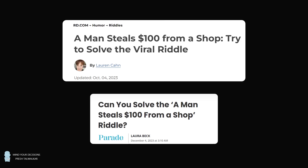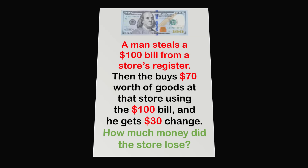Hey, this is Prashita Walker. There's a viral puzzle that has been making the rounds. Here's the problem: A man steals a $100 bill from a store's register. Then he buys $70 worth of goods at that store using the $100 bill, and he gets $30 change. How much money did the store lose?